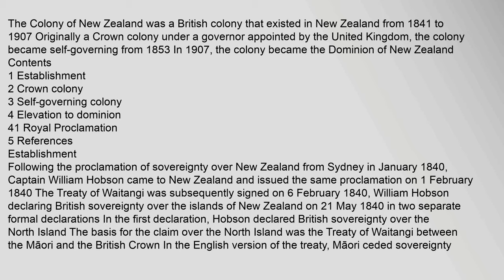William Hobson declared British sovereignty over the islands of New Zealand on 21 May 1840 in two separate formal declarations. In the first declaration, Hobson declared British sovereignty over the North Island. The basis for the claim over the North Island was the Treaty of Waitangi between the Maori and the British Crown. In the English version of the treaty, Maori ceded sovereignty.